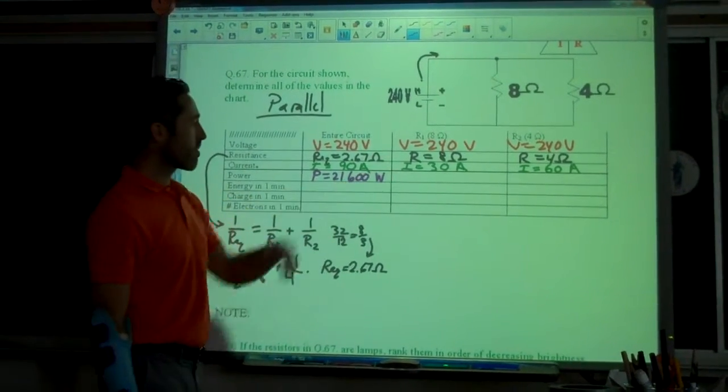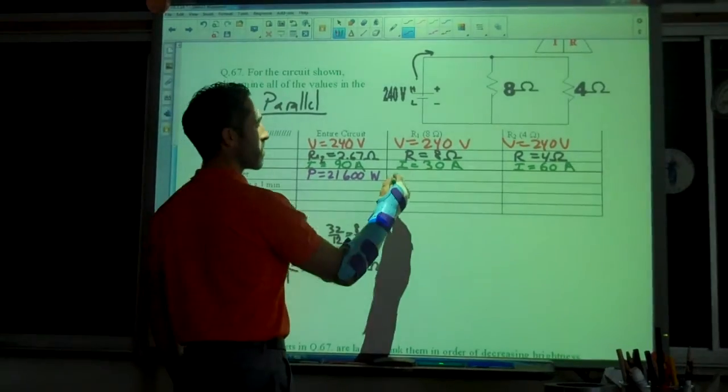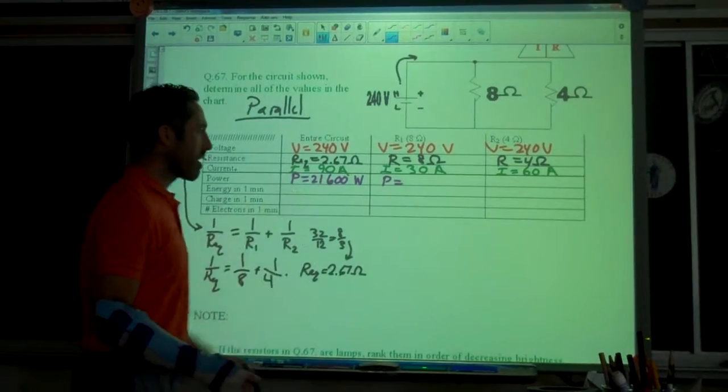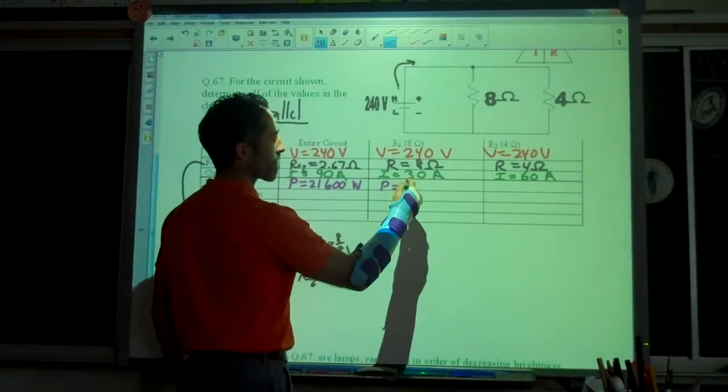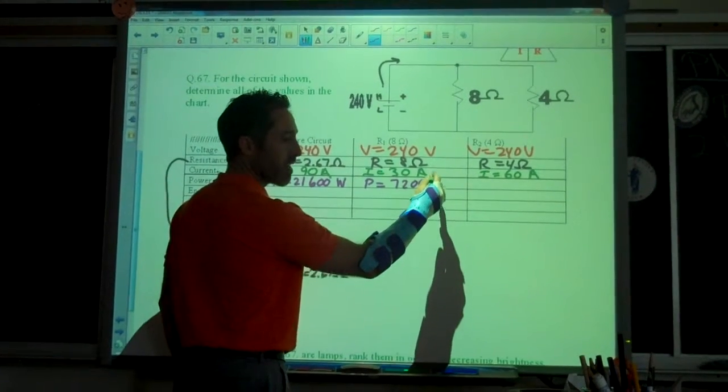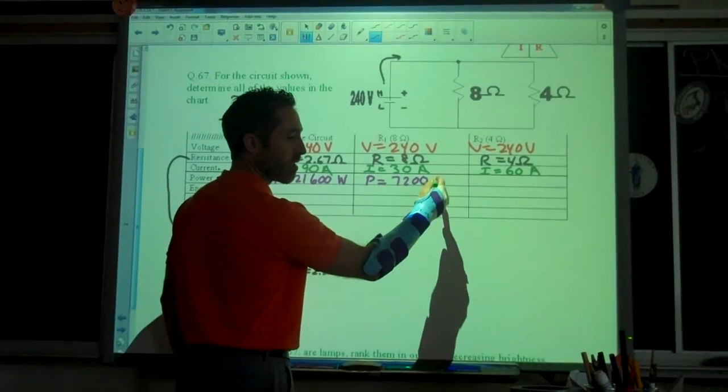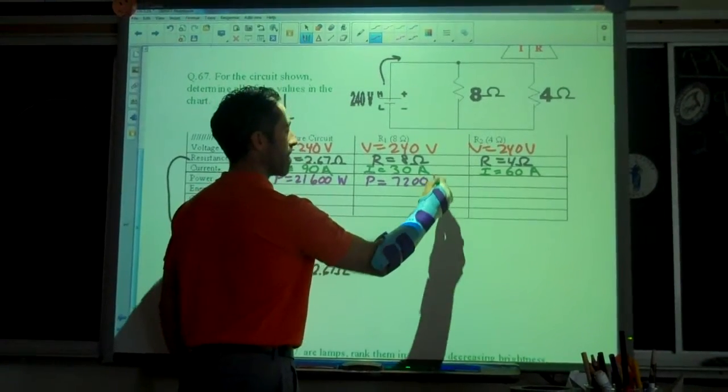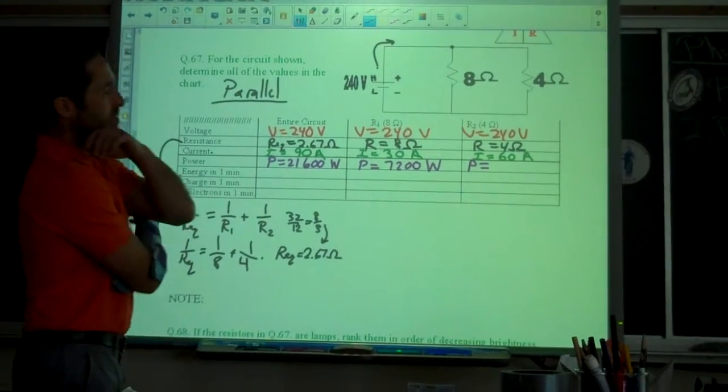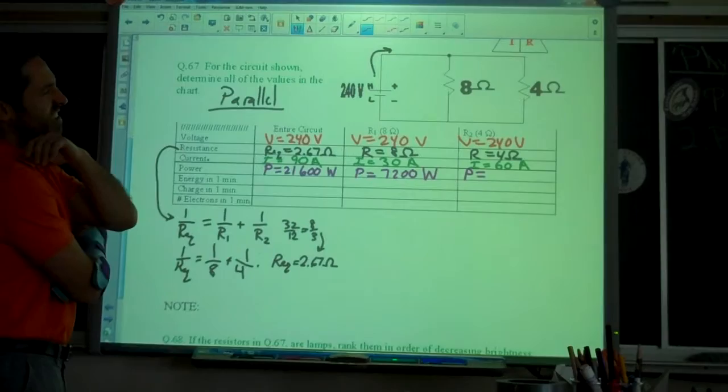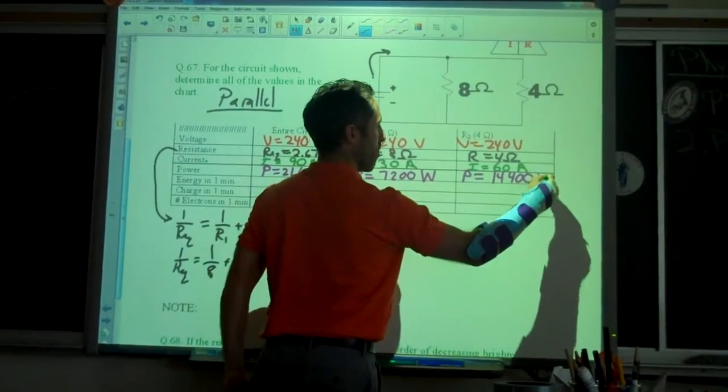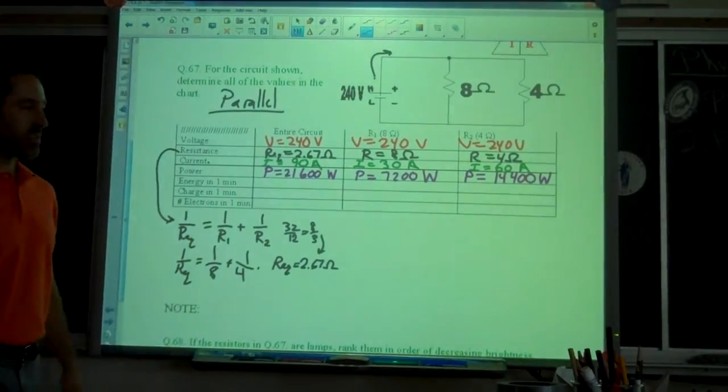Now you can do the same thing with the others. V times I. These are a little easier. You can pause this at any point and run the numbers, then replay it. So V times I here. This one's going to be 72 and two zeros. 7,200. What's the unit? Terry? Watts. Good. Over here. Last one. V times I. 24 times 6. Let's see. 156 less. That's going to be 144 with two zeros. 14,400 watts.